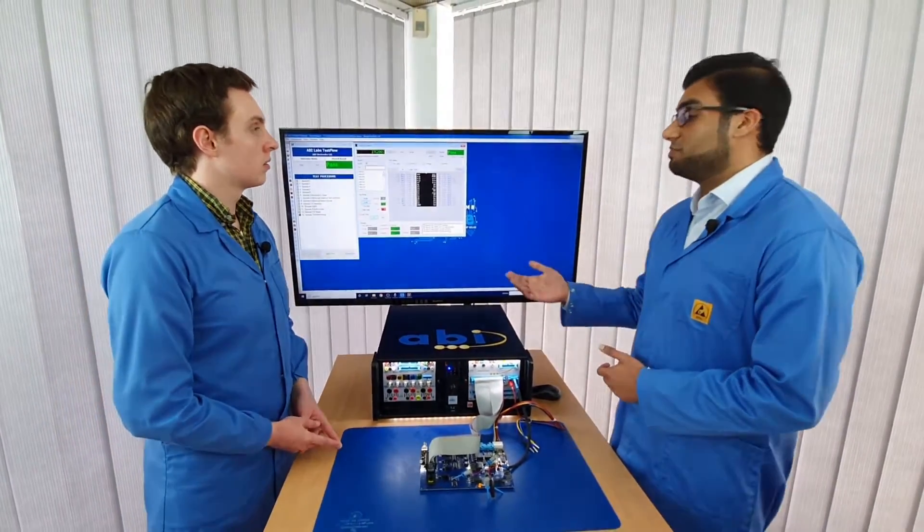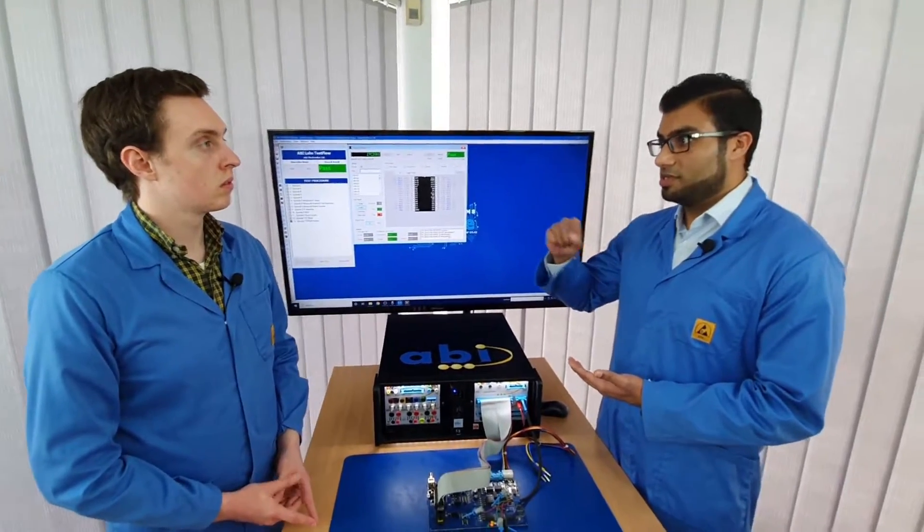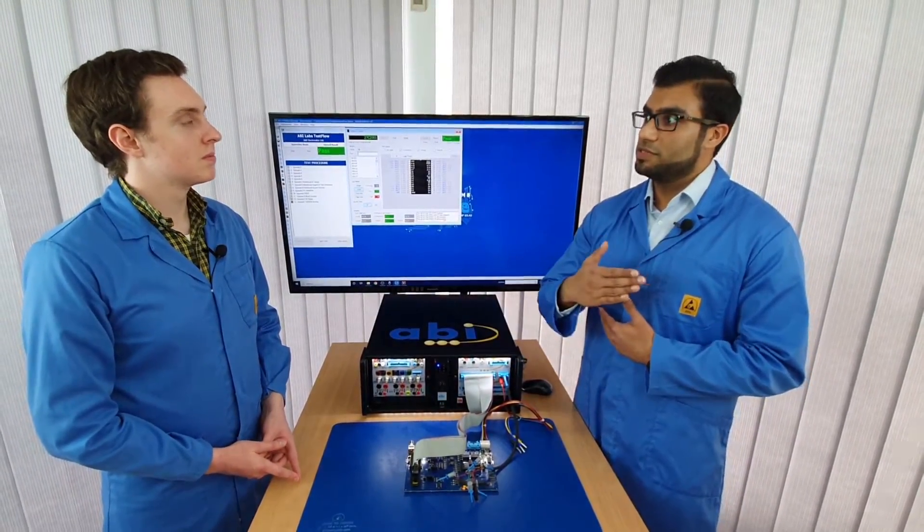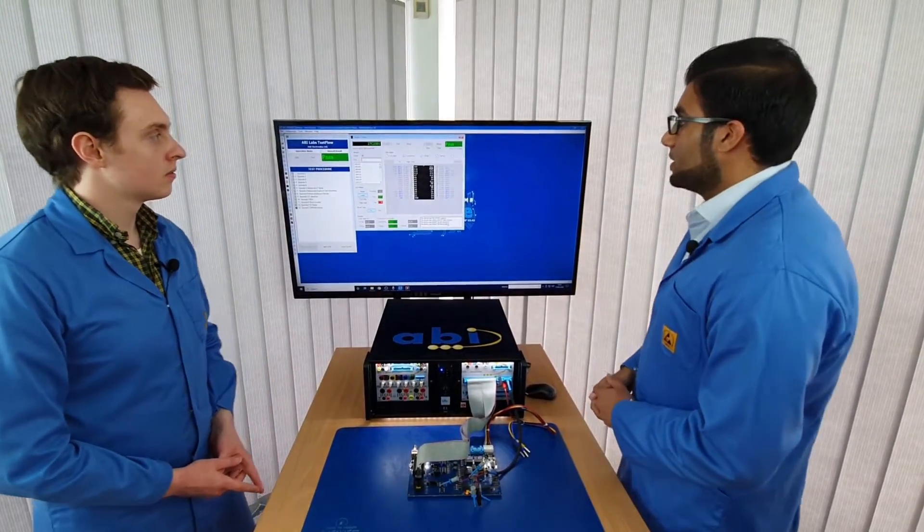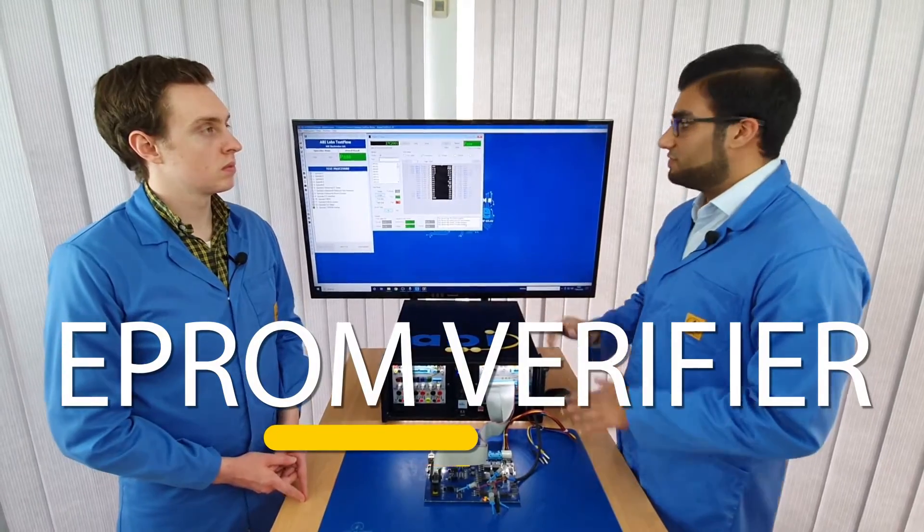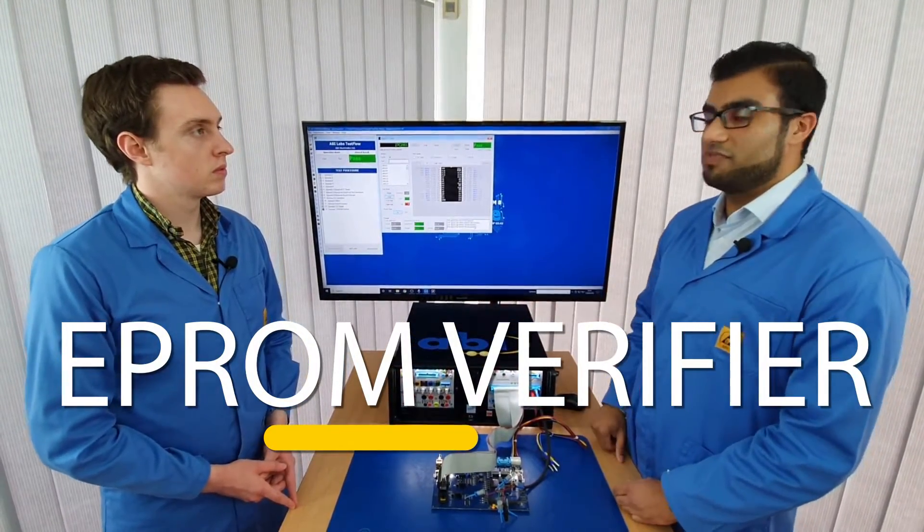Right, okay. So we can simply do the EEPROM Verifier test, check that off the list, and once we're happy that the device is working, we can move on into the other tests. Okay, fantastic. So now that we're happy with that device, that it's passing, that it's stabilized, everything's fine, we can then move on into the EEPROM Verifier itself.